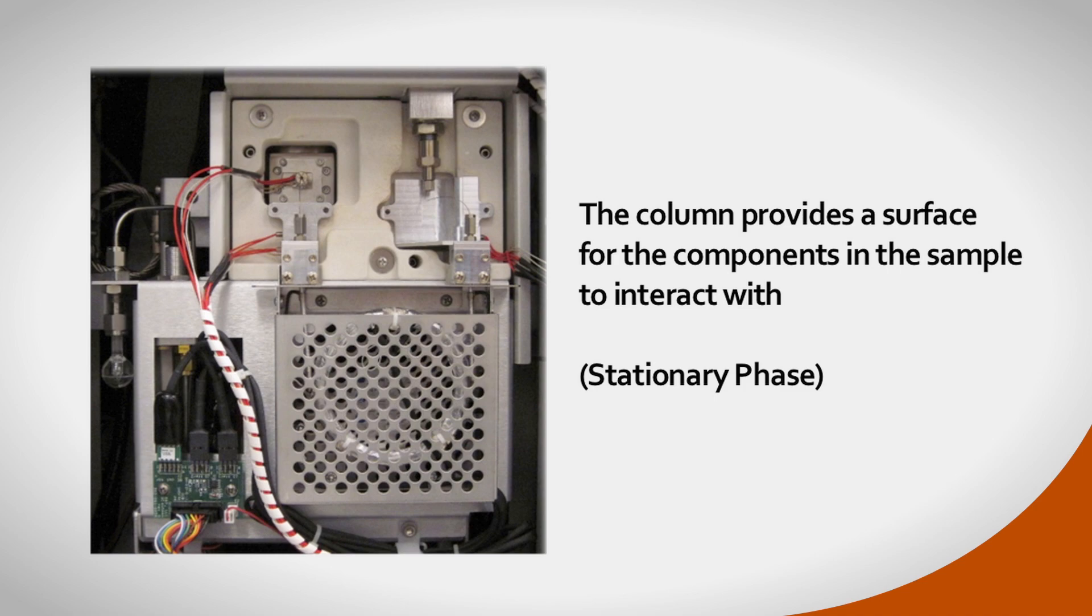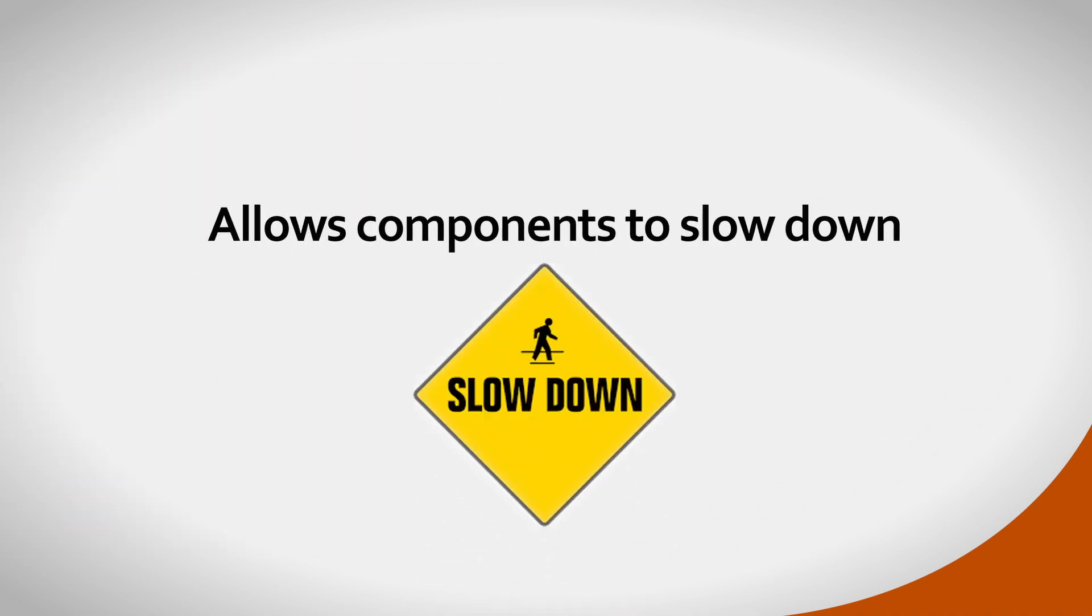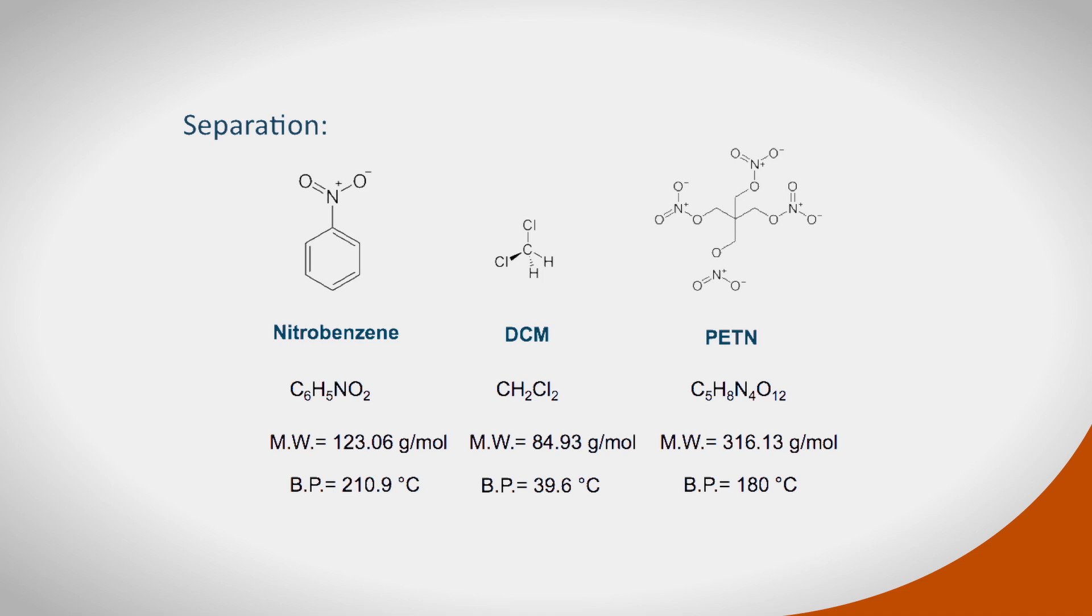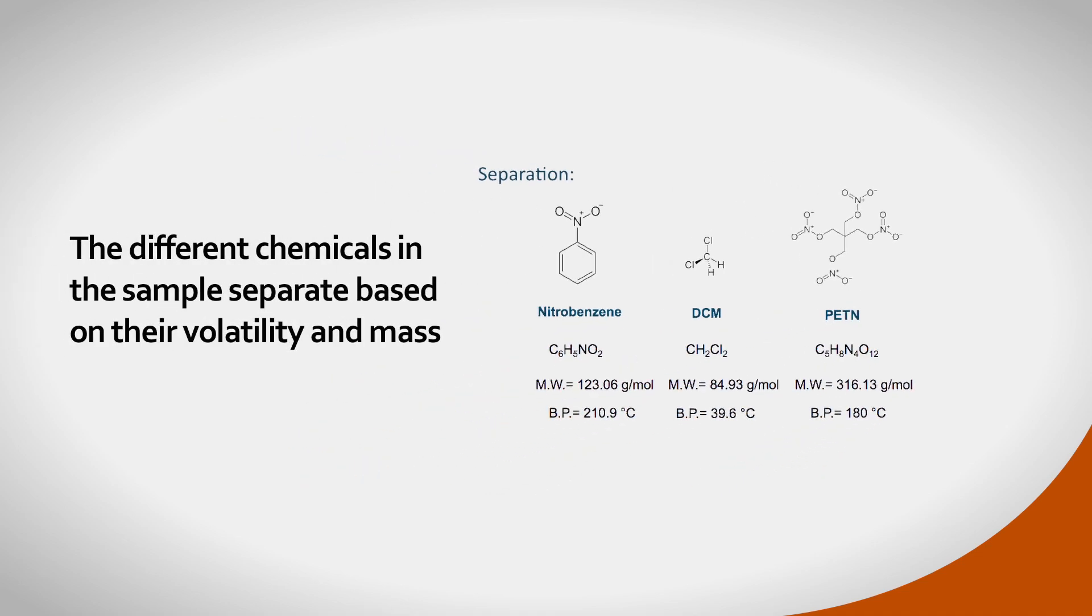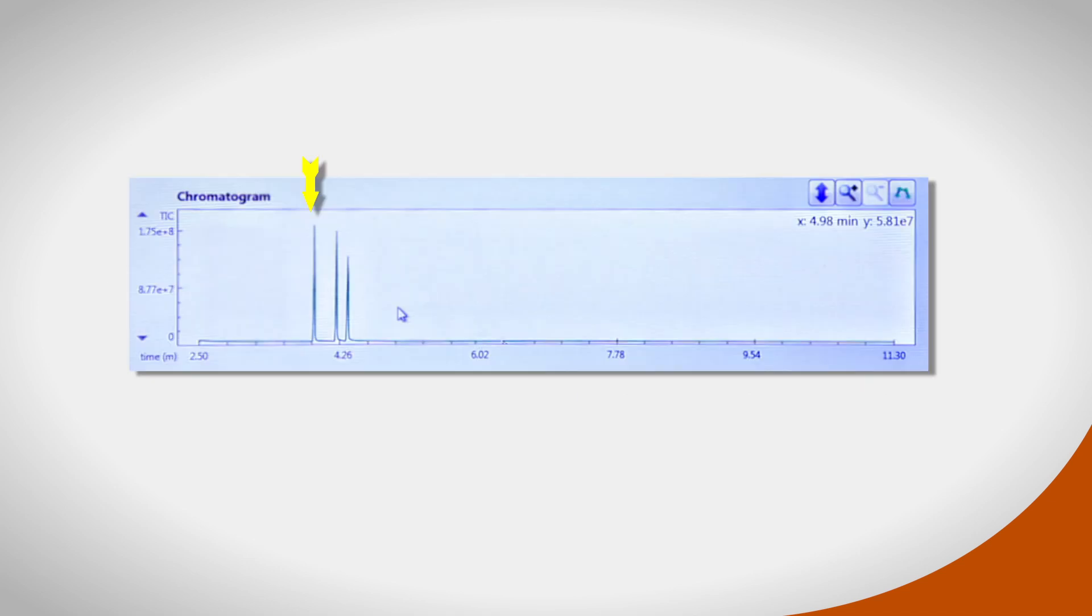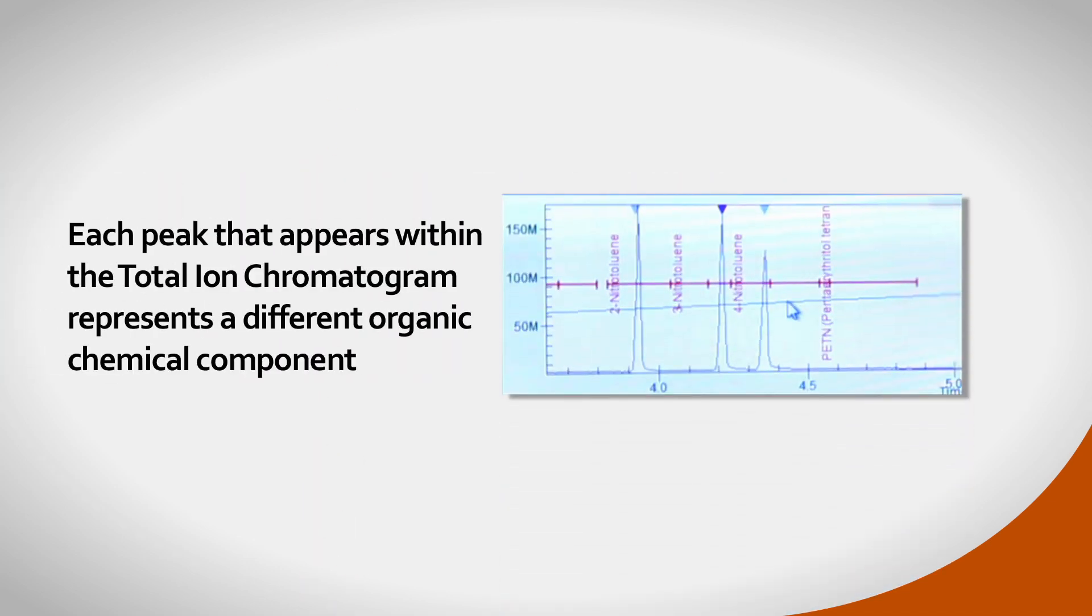This column provides a surface for the components in the sample to interact with. This is called the stationary phase, and it allows the components to slow down, allowing for separation to occur. The different chemicals in the sample separate based on their volatility and mass. Each peak that appears within the total ion chromatogram represents a different organic chemical component.